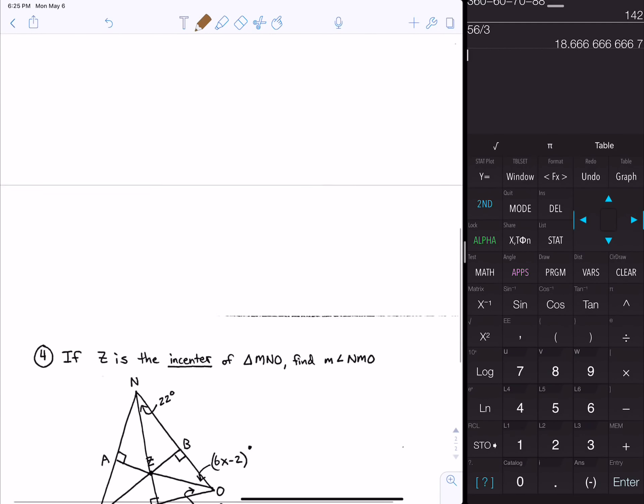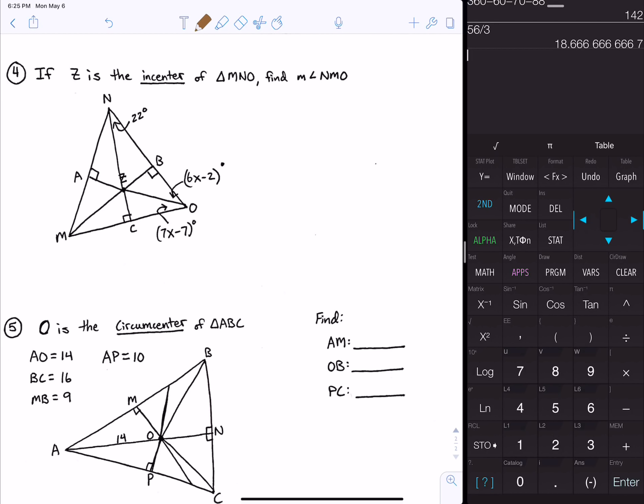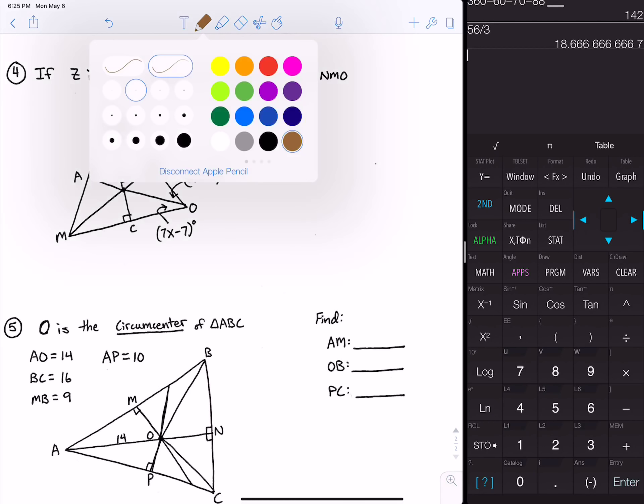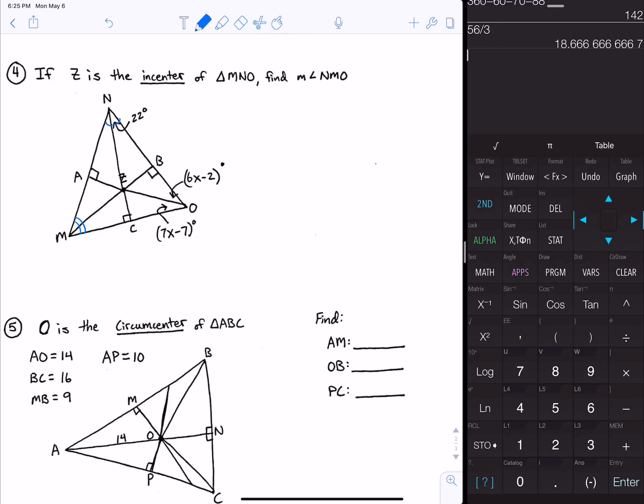Number four: if Z is the incenter of triangle MNO, find the measure of angle NMO. Incenter is formed from the angle bisectors, so that means these are equal, those are equal, and those would be equal. We're trying to figure out the measure of angle NMO. If this little angle up here near the letter N is 22, the one beside it would also be 22. These two nearer the letter O are equal to each other because that angle is also bisected.